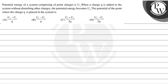Hello students, let's read this question. The question says that the potential energy of a system comprising a point charge is U1. When a charge Q is added to the system without disturbing other charges, the potential energy becomes U2. The potential of the point where the charge Q is placed in the system is: U2-U1 upon Q, U1-U2 upon Q, U1 plus U2 upon 2Q, or U2-U1 upon 2Q. We have to choose the correct option.